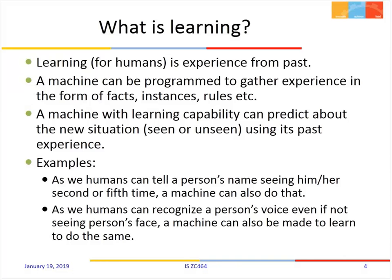A machine can be programmed to gather experience in the form of facts, instances, rules, etc. A machine with learning capability can predict about new situations — situations it may have already seen or never seen before. Humans are very good at responding to even unseen situations. A small child who has learned only to walk on a road can also overcome obstacles or save themselves from falling — these are all unseen situations to which the child responds.